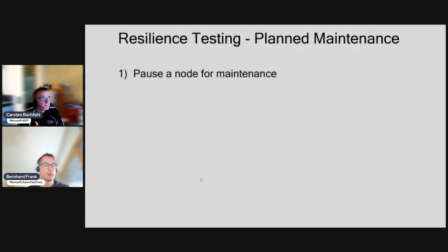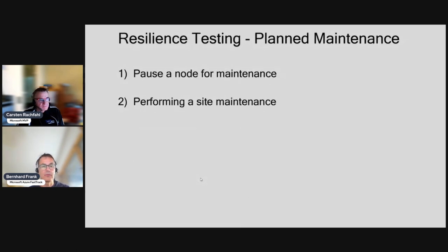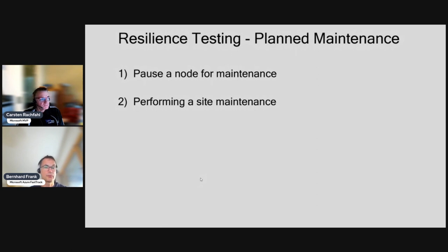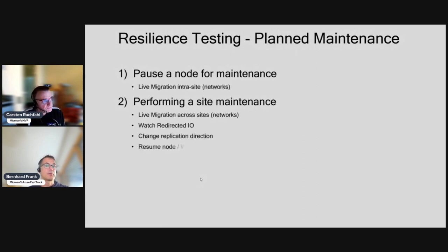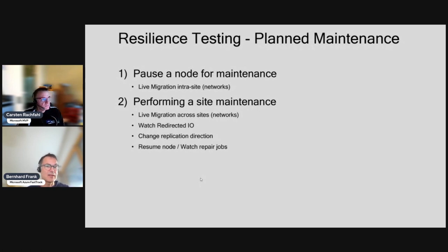We're looking at pausing a node for maintenance so we can reboot it. We also want to do the same in a site view - maybe there is a planned outage of one geography or one site, and we need to shut down or live migrate the workload over to the remaining site. We'll look at which networks the live migration will happen over, because that dictates the speed we can achieve, and there is some storage traffic that might need to be redirected.